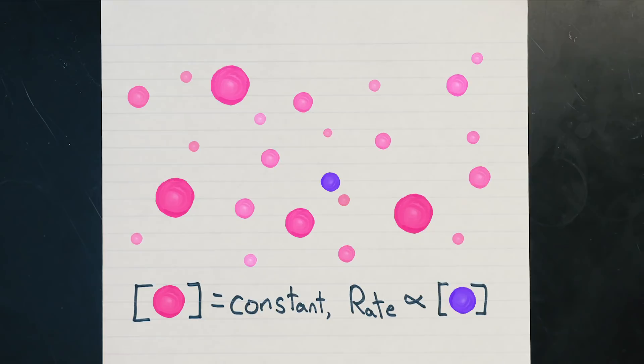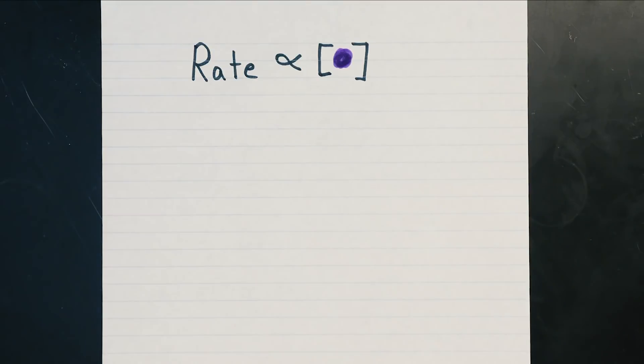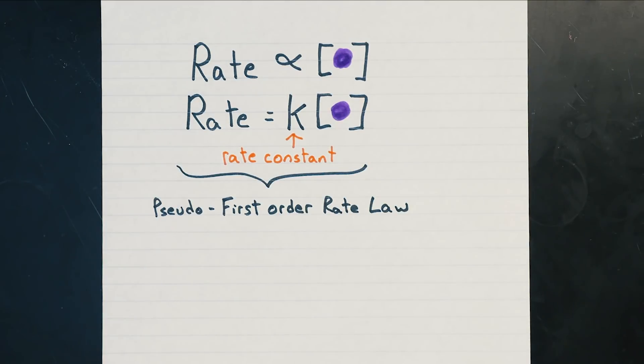We can change a proportionality to an equation by incorporating a constant, which we'll call the rate constant. This is what we call a pseudo first-order rate law: first-order because it depends on only one reactant.